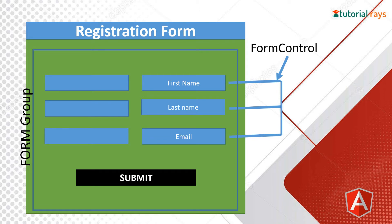Let's look at this illustration to understand FormControl and FormGroup. Suppose this whole area is a complete form with first name, last name, and email fields. This complete form is called FormGroup. The individual elements — first name, last name, email — are called FormControls. So individual elements are FormControls and the whole group is called FormGroup.